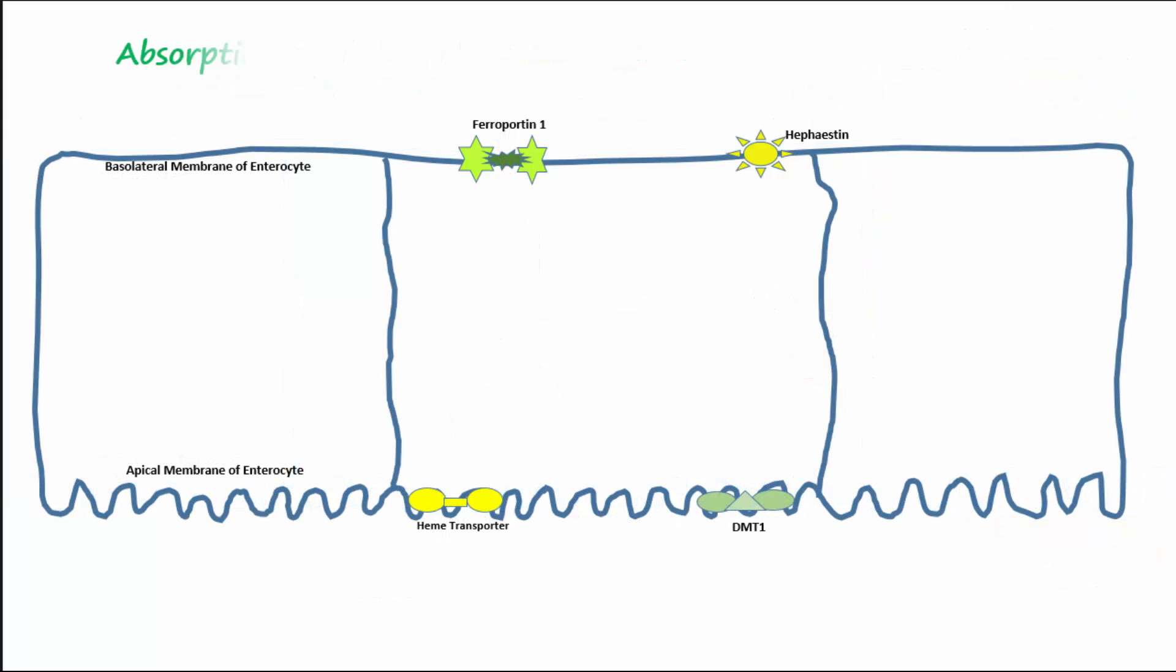What about absorption of non-heme iron? Non-heme iron, also known as inorganic iron, is mostly in the ferric or oxidized state as Fe3+. In order to cross the apical membrane it must first be reduced to Fe2+ or ferrous iron. This is done by ferroreductases. One of the more well-known reductases is duodenal cytochrome B, found in the apical membrane of the enterocytes. After reduction, ferrous iron crosses the apical membrane via divalent metal transporter 1 or DMT1 with hydrogen ions.